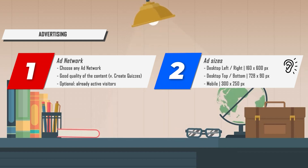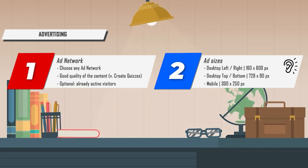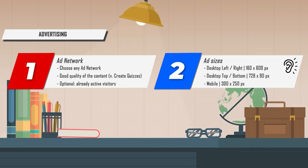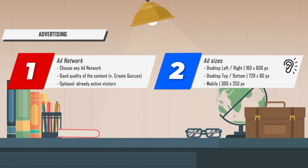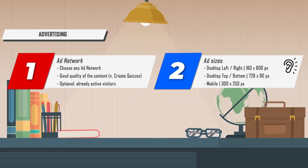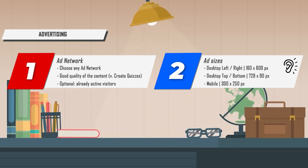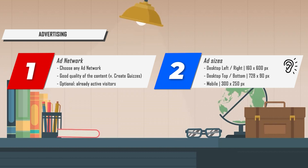The size of the ads must be taken into account. For desktop devices, i.e. computers and notebooks, you should select a display of 160 by 600 pixels on the left and right sides. For top and bottom you should choose an ad size of 728 by 90 pixels. For mobile devices, i.e. smartphones and tablets, you only need one ad size — 300 by 250 pixels.